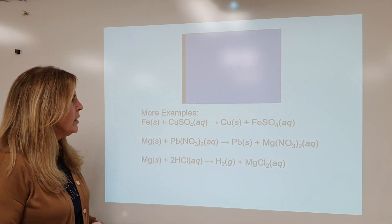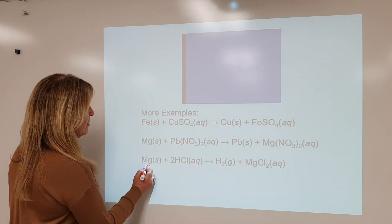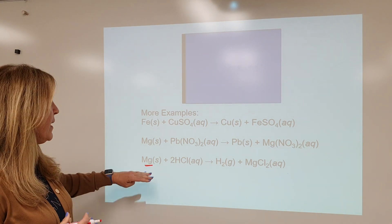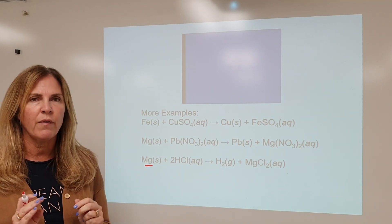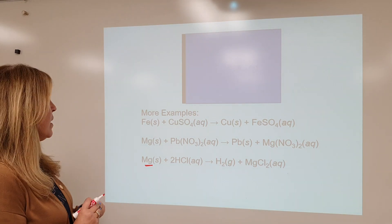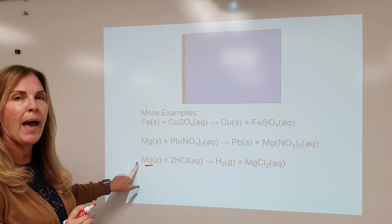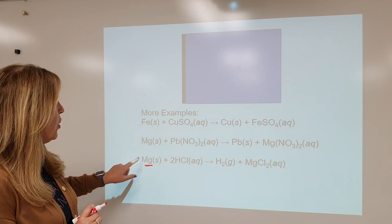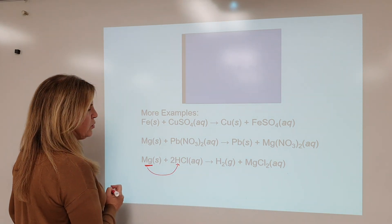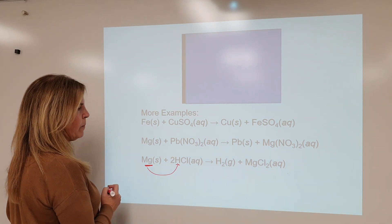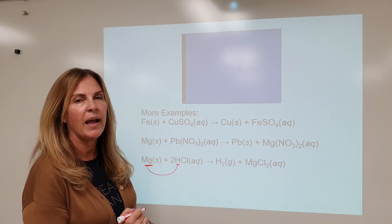One more example. Again, we have something by itself plus a compound — that's how I identify it as single displacement. This element happens to be a metal, so it's going to replace the more metallic element, which would be hydrogen in this case. We're going to have magnesium chloride as a compound and hydrogen gas.